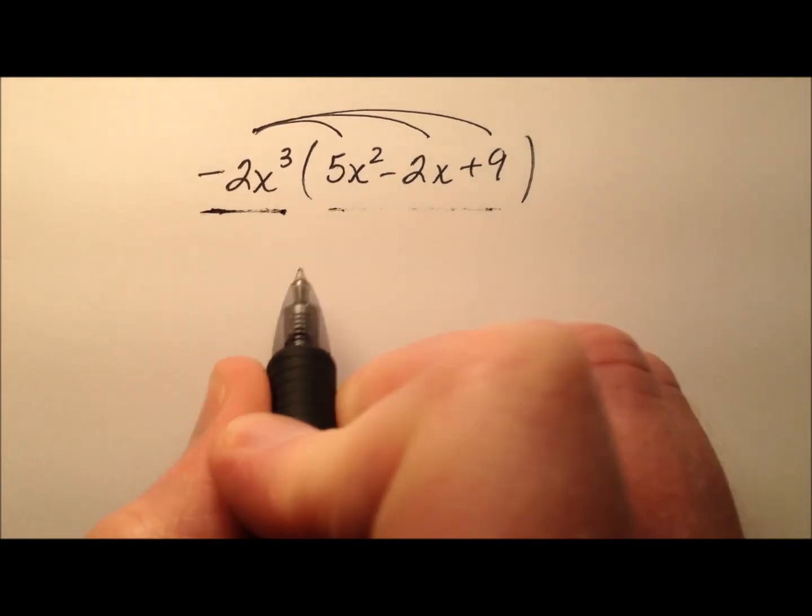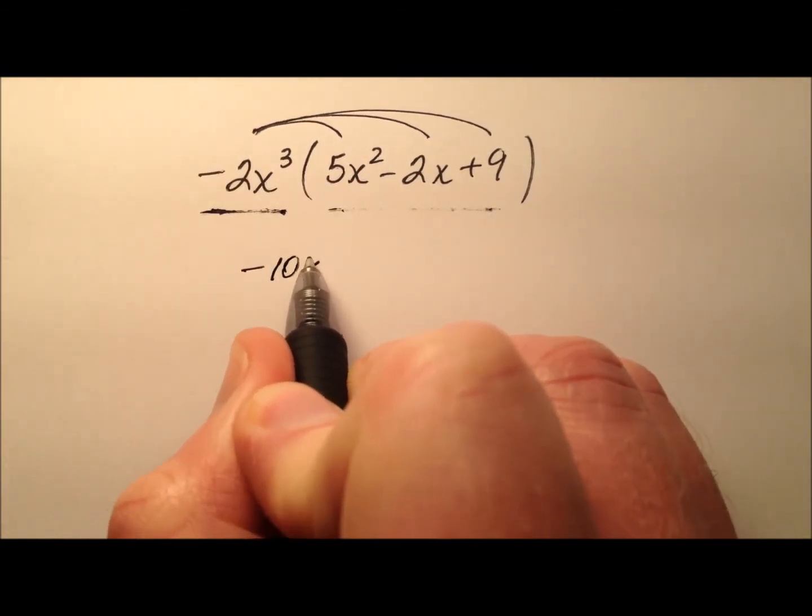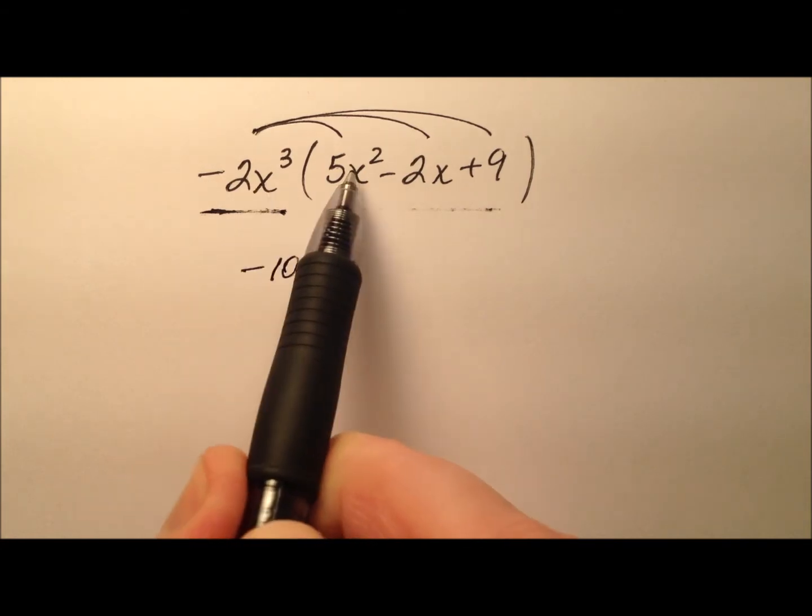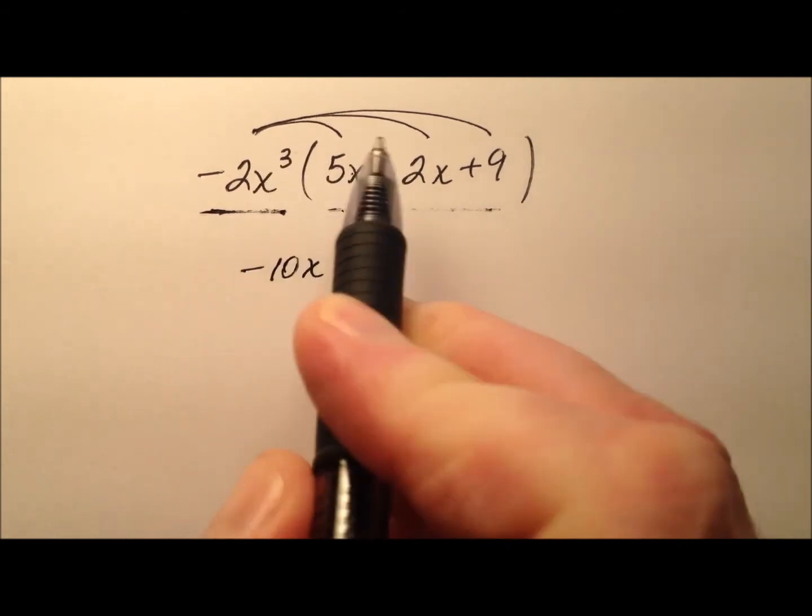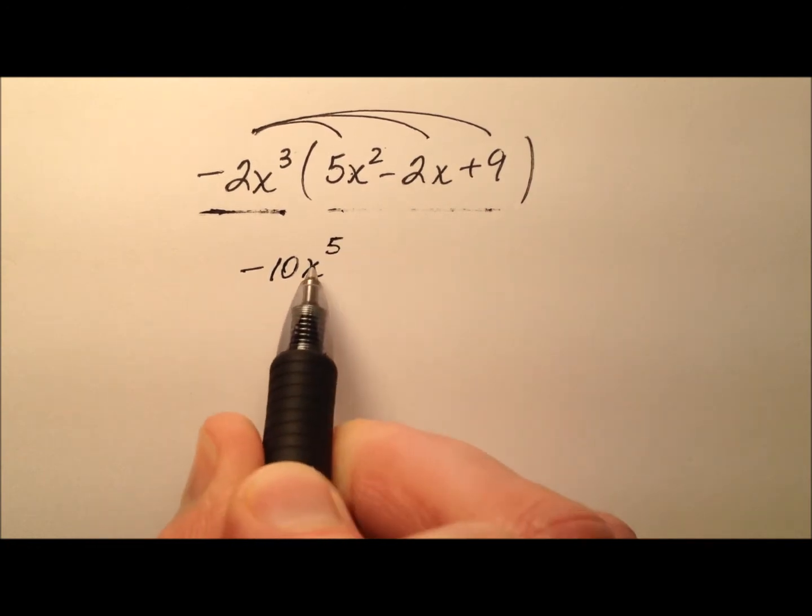So negative 2 times 5 is negative 10. And then we have x cubed here and x squared here. So we'll add those exponents since we're multiplying, giving us x to the fifth.